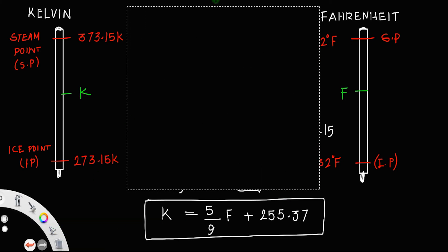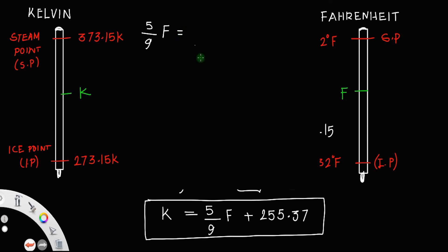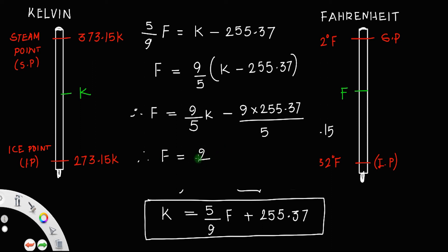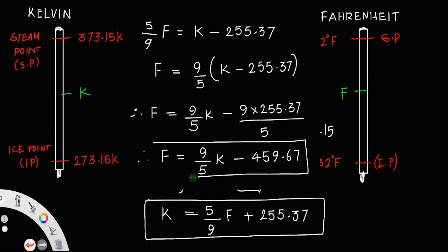Also, rearranging: 5/9 F equals K minus 255.37, so F equals 9/5 times (K minus 255.37). Therefore, F equals 9/5 K minus 459.67. You can write this relation in terms of Fahrenheit like this.